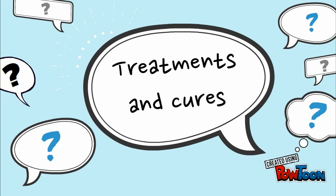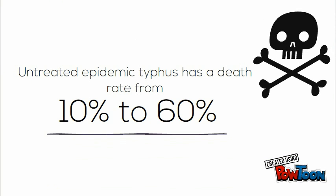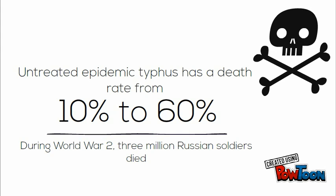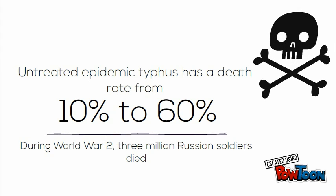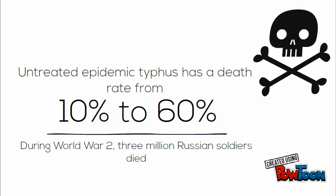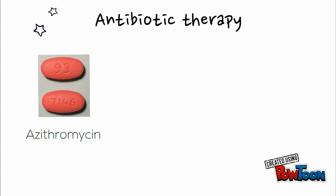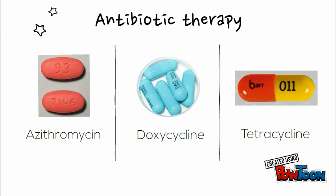Treatments and Cures. Untreated epidemic typhus has a death rate from 10% to 60%, with older people having a high risk. During World War II, 3 million Russian soldiers died. Antibiotic therapy is recommended. Antibiotics include azithromycin, doxycycline, and tetracycline.